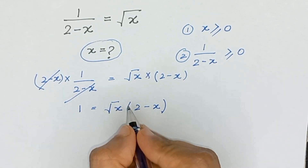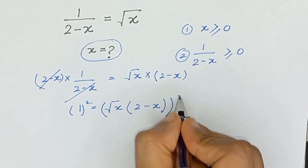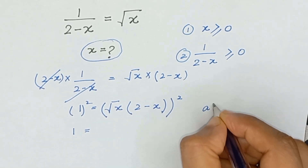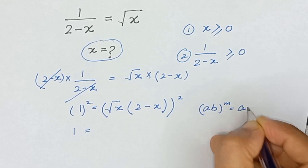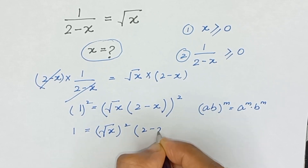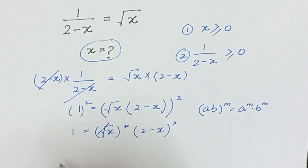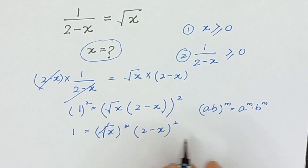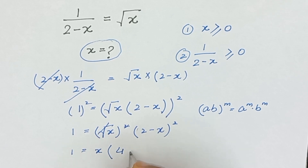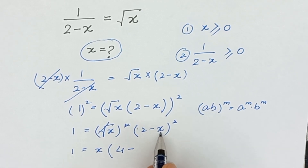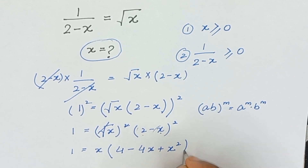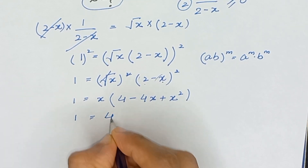Now to remove the square root we will apply squaring on both sides. It will become 1 is equal to — using the rule that (a times b) to the power m equals a to the power m times b to the power m — the square root of x squared cancels out, and 2 minus x whole squared expands as 2 squared minus 2 times 2 times x, giving 4 minus 4x.